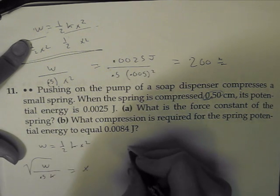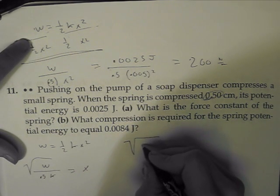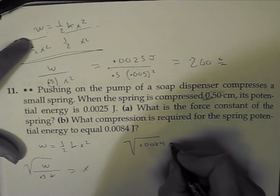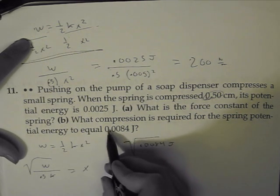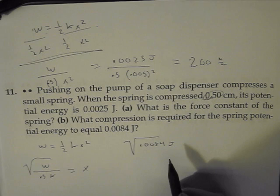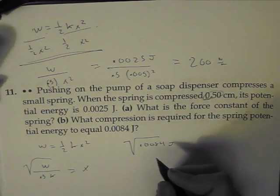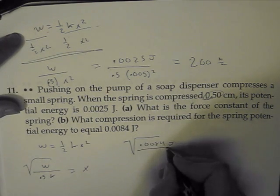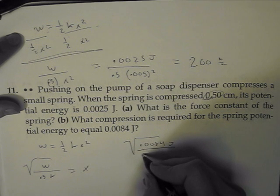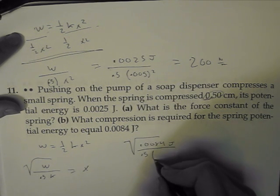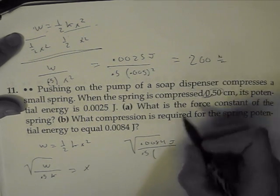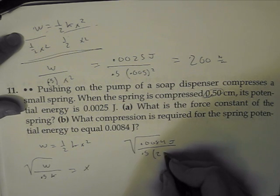So if you're going to plug in numbers, it would just be 0.0084 joules, because now this is 0.0084 joules for the distance we're solving for. This is going to be at a different distance, divided by 0.5, multiplied by 200, because that's our k value that we found.